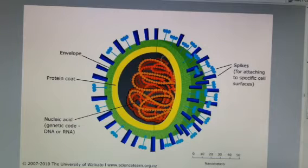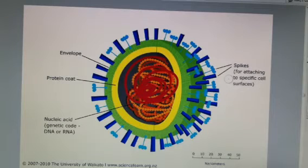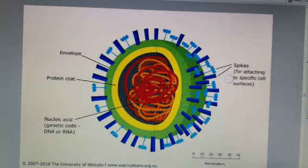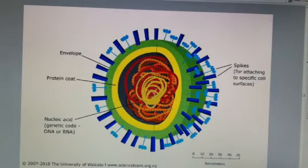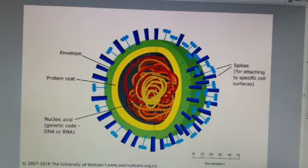The general structure of a virus is shown here in the middle. We have either DNA or RNA, or sometimes both — sometimes it's double-stranded DNA, single-stranded DNA, single-stranded RNA, or double-stranded RNA. In the center of the virus, there is some kind of genetic material. Then on the outside of the genetic material, we have a protein coat.